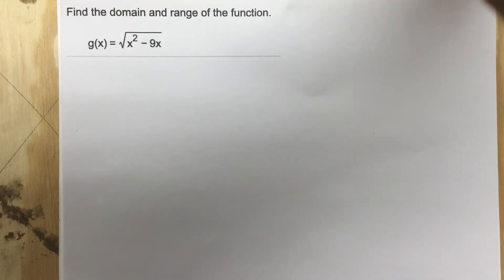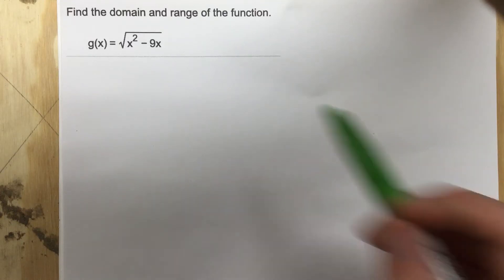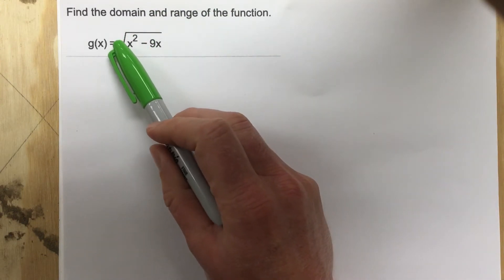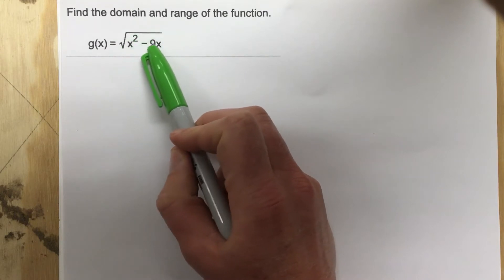This is problem number two from section 1.1. In this problem it says find the domain and range of the following function. You'll see that we have a radical function and inside that radical function we have a polynomial.